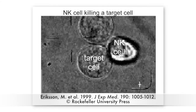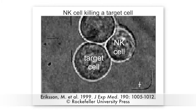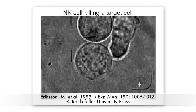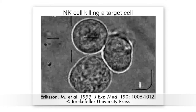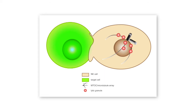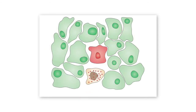Natural killer, or NK cells, are a type of innate immune cell that kill transformed or virally infected cells by secreting the cytotoxic contents of specialized lysosome-related organelles called lytic granules. Jordan Orange and colleagues at Baylor College of Medicine previously discovered that NK cells initially gather their lytic granules around their microtubule organizing center before the mTOC polarizes towards the immunological synapse, where the NK cell contacts its target and where the granules can be secreted to induce cell death.